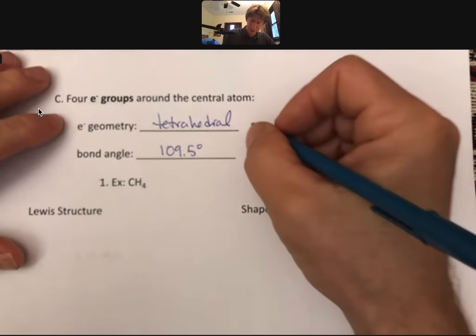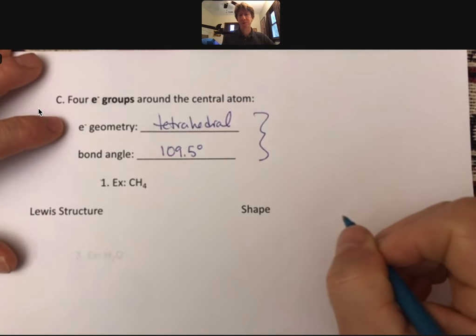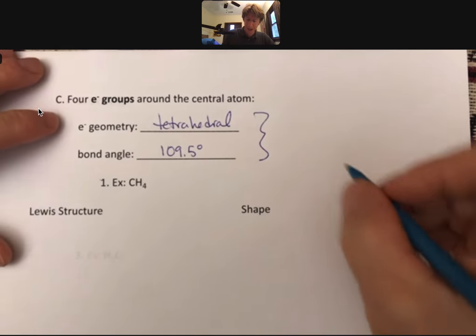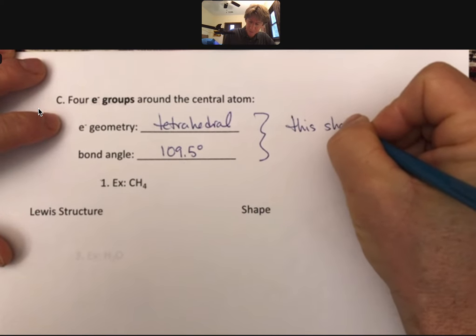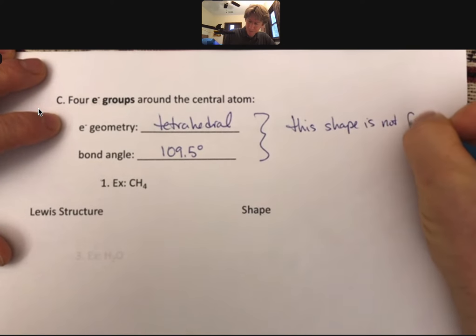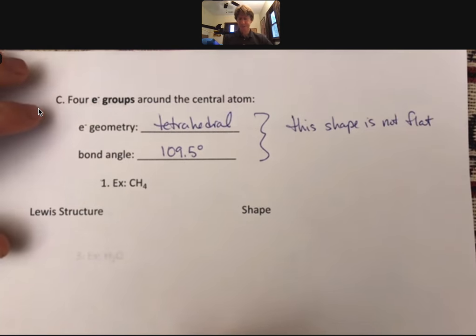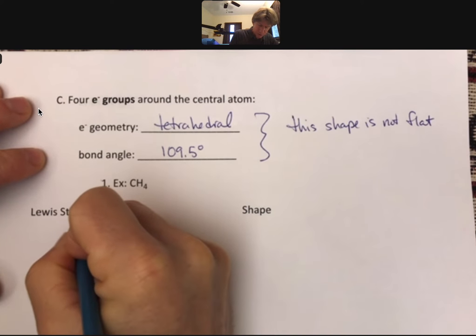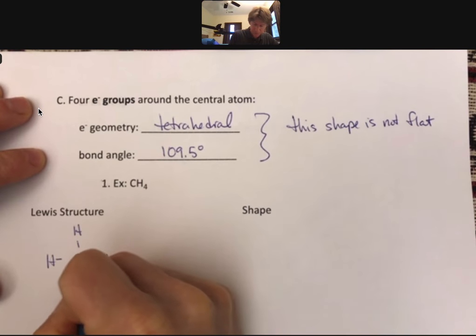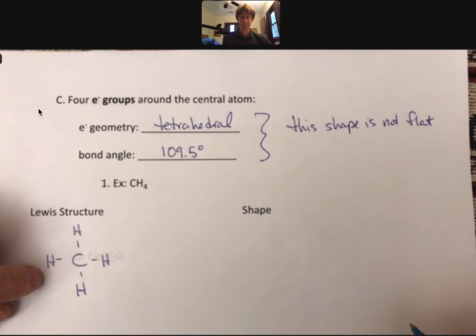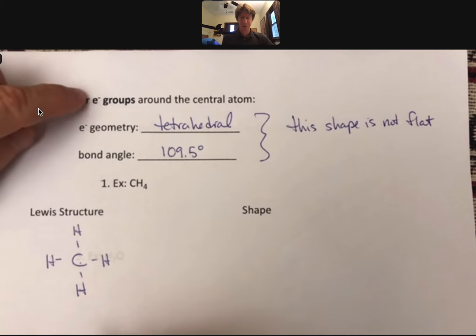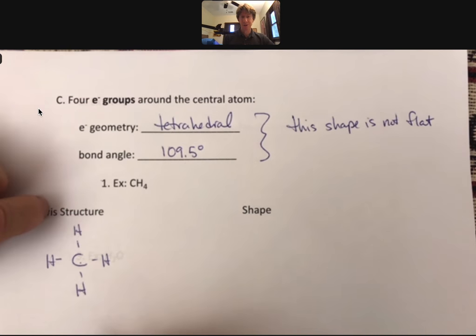A couple notes here before we even draw it. This shape is not flat. The other two are, this shape is not flat. And we will have to show that in our drawings. First, though, for CH4, let's do the Lewis structure. If we do the Lewis structure for CH4, we get this Lewis structure here. We see that around the central atom there are one, two, three, four electron groups. So we're in the right place.